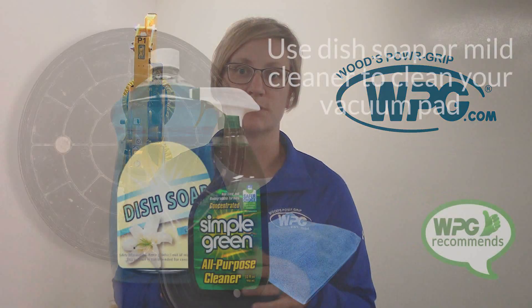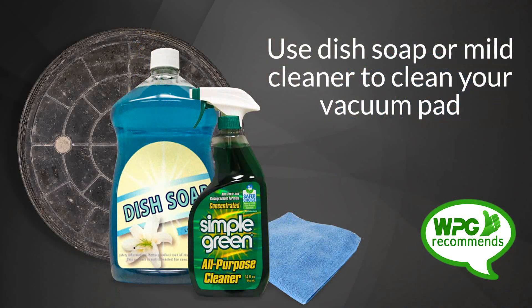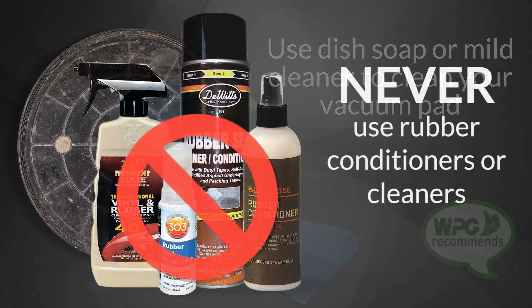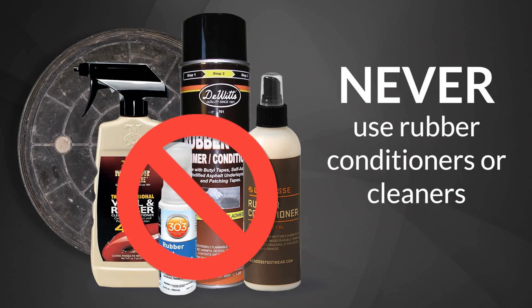The severity of the vacuum leak is going to depend on the severity of the issue. Most often, the vacuum pad is affected first just by the nature of how it's used. The pad will function best when it's clean, so if it's visibly dirty, a mild cleaner like dish soap or Simple Green should be used. You'll never want to use rubber conditioning products as they will cause the pad to become slick.